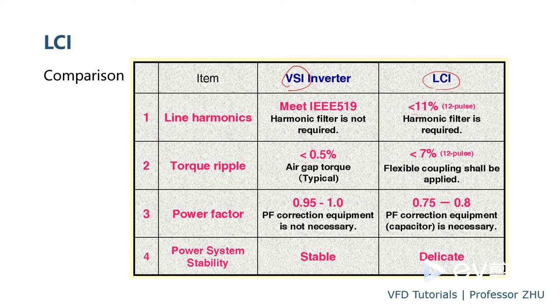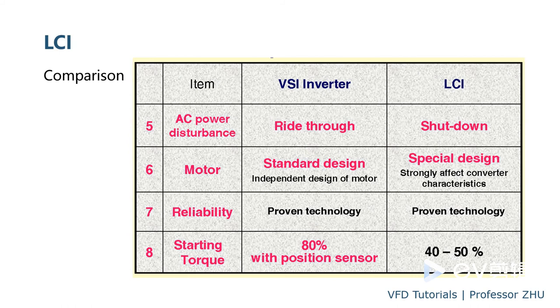And torque ripple. VSI uses PWM technology. So output current waveform is very good, very sinusoidal. But this one is a trapezoidal waveform. So the torque ripple is very high. Power factor, as we said, because of the diode rectifier. And LCI uses SCR rectifier, because of the lagging of the current on the input side. So power factor is also low. And power system stability, big difference.